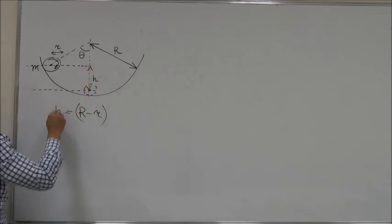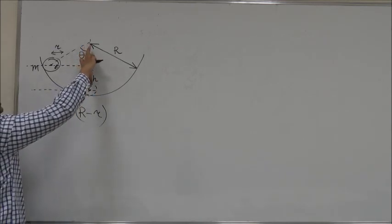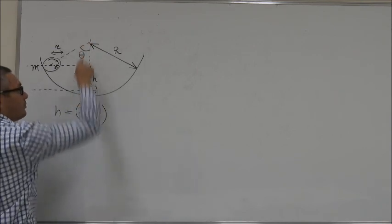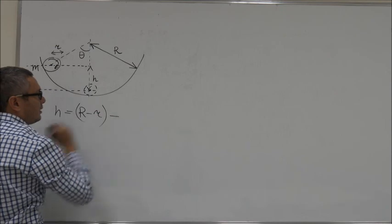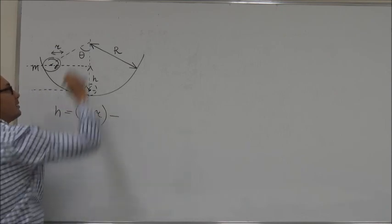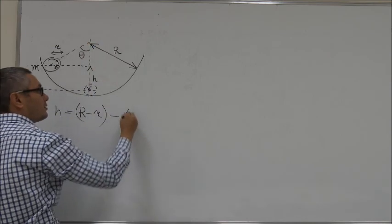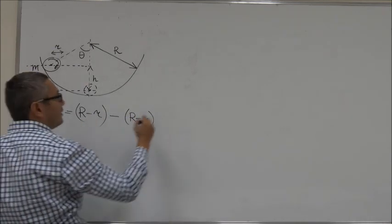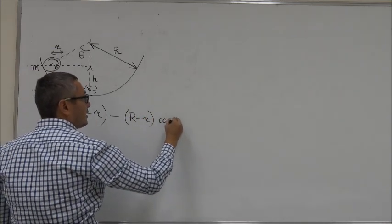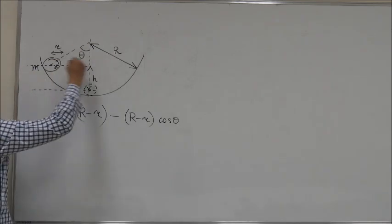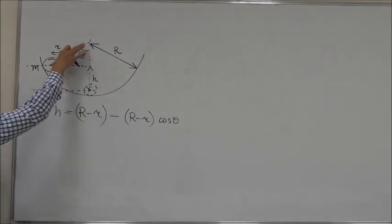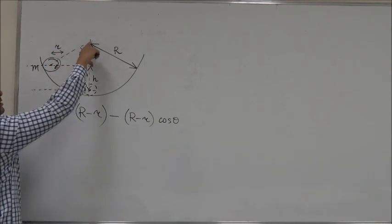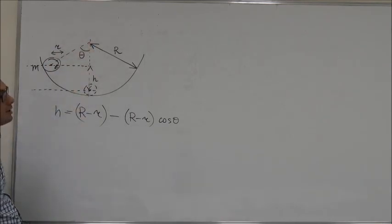h is equal to this big distance minus this small distance. So, the big distance is R minus small r minus this thing, which is equal to R minus small r times cosine of theta. Just look at this triangle. This angle is theta. This would be cosine of theta.